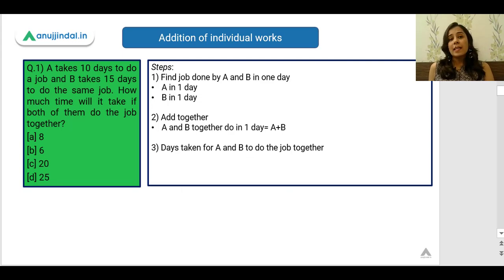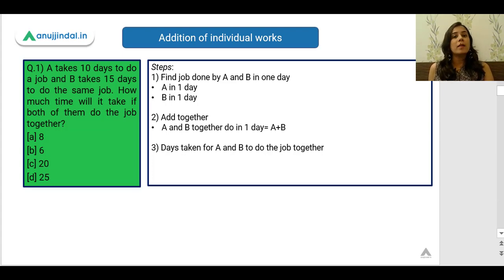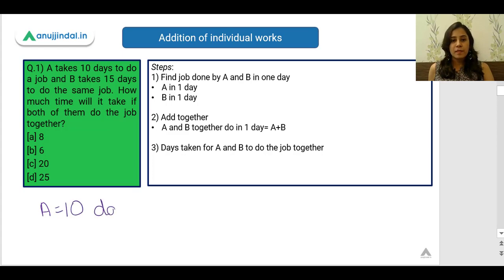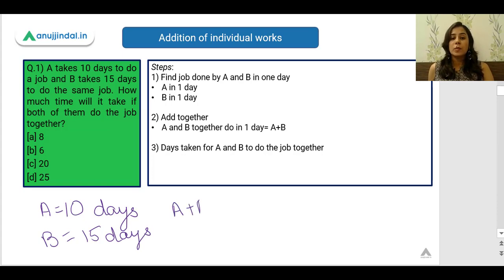Now let's solve problems using this concept. The simplest variation: A takes 10 days to do a job and B takes 15 days. What is the time taken if both work together? Obviously, working together will take less than 10 days. The first step is always to find the work done by each individual in one single day.